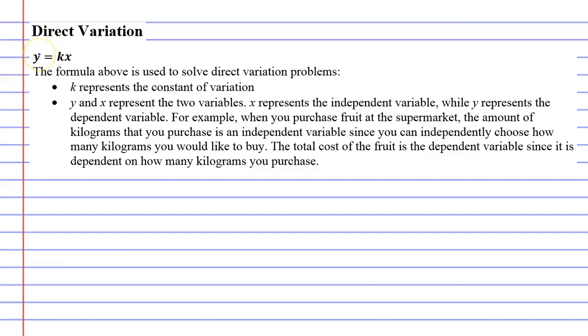Here we have the formula for direct variation. It is y equals kx. Or if we spread it out, y equals k times x.